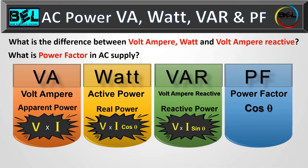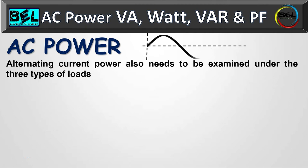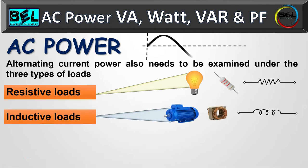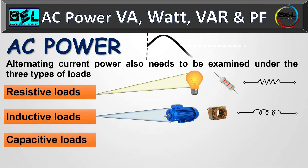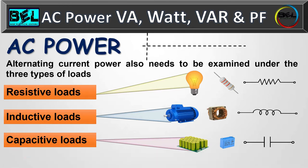AC power is alternating current power in which the current continuously changes its direction as well as magnitude. AC power also needs to be examined under three types of load: the first is resistive load, the second is inductive load, and the third is capacitive load. In the calculation of AC power, each type of load produces different results, so in this video we will discuss each load separately.